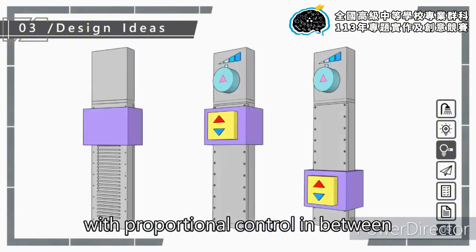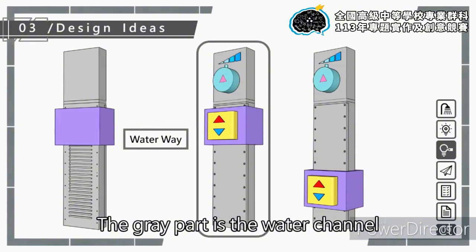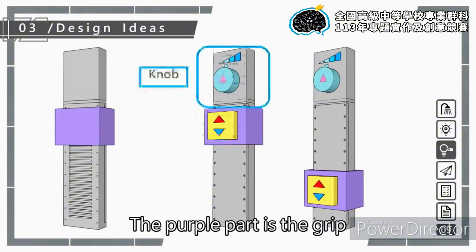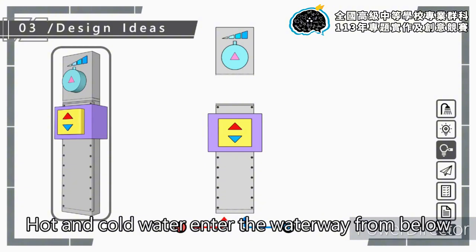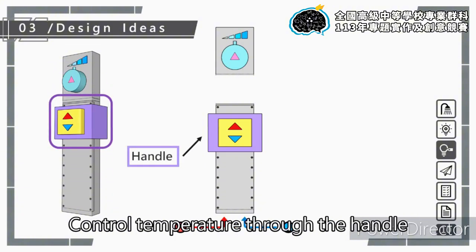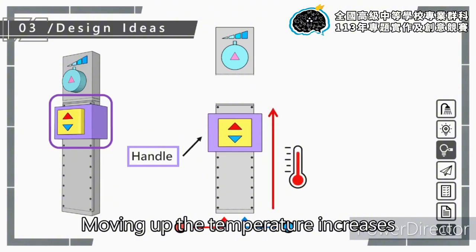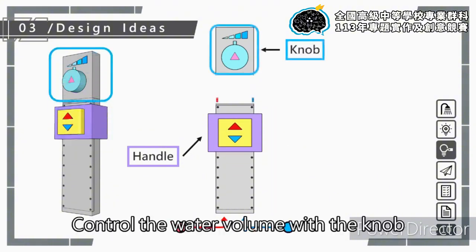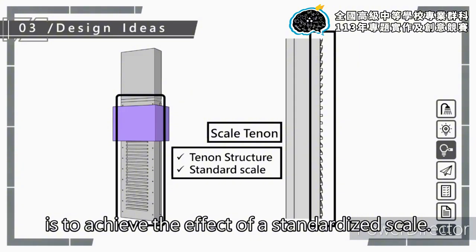We use SketchUp to draw the overall structure. The gray part is the water channel containing the structure just mentioned. The purple part is the grip, the blue part is the knob. Hot and cold water enter the waterway from below, control temperature through the handle. Moving down, the temperature decreases; moving up, the temperature increases. Control the water volume with the grip. The frame design at the back achieves the effect of a standardized scale.